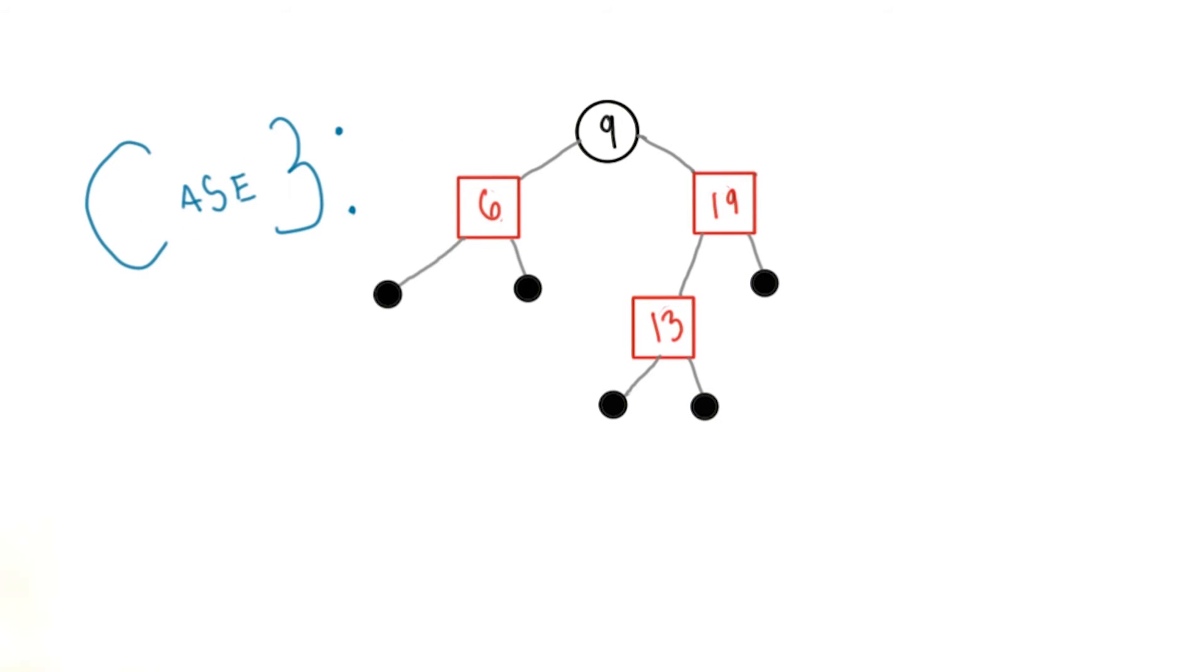Now, if the parent is red, there are several cases with more complicated solutions. If the parent and its sibling are both red, then they should be changed to black, and their parent, the grandparent of the node you're inserting, becomes red.